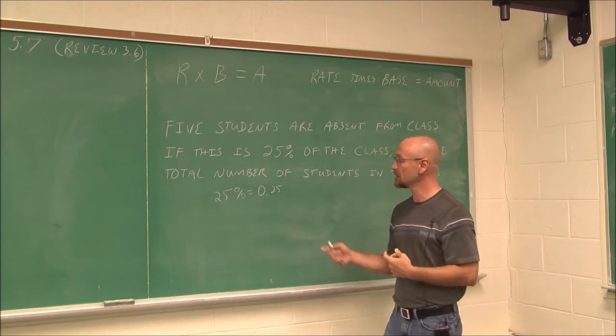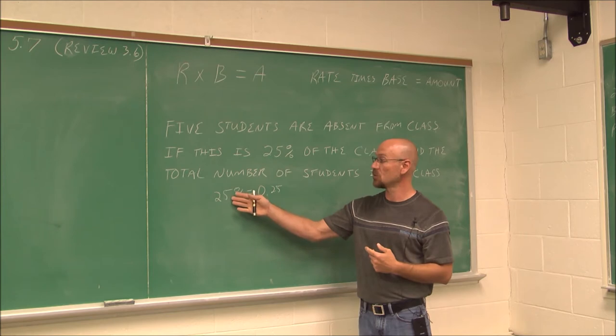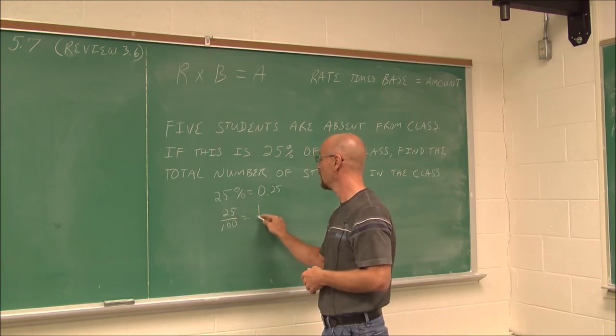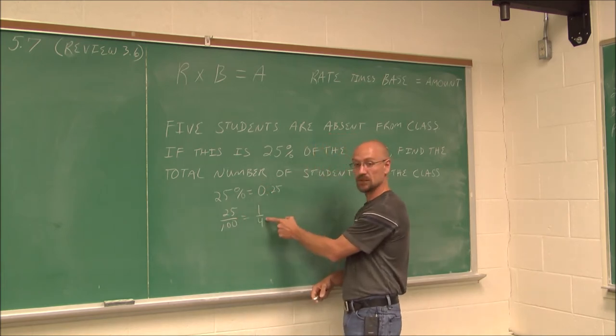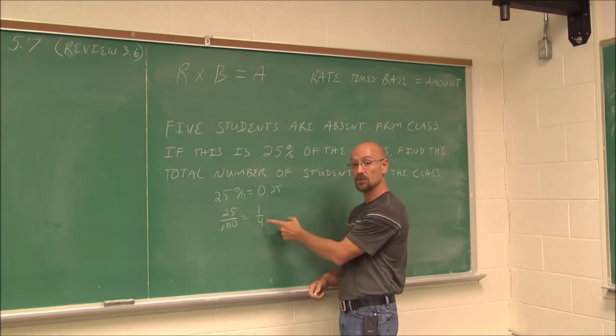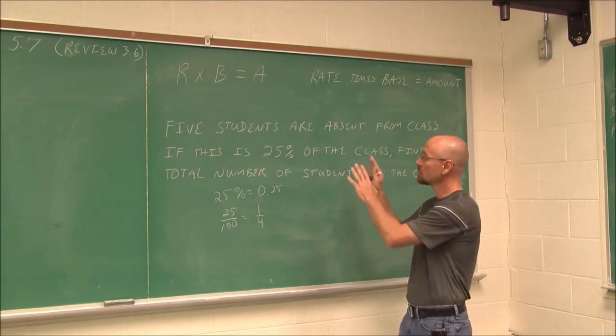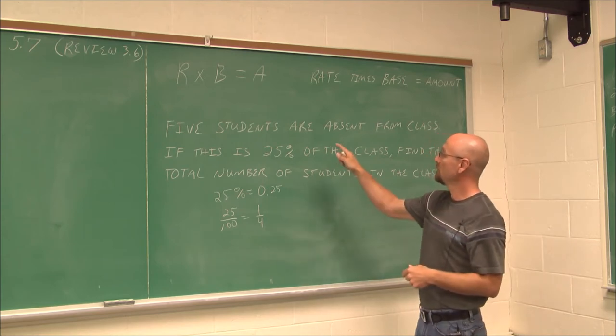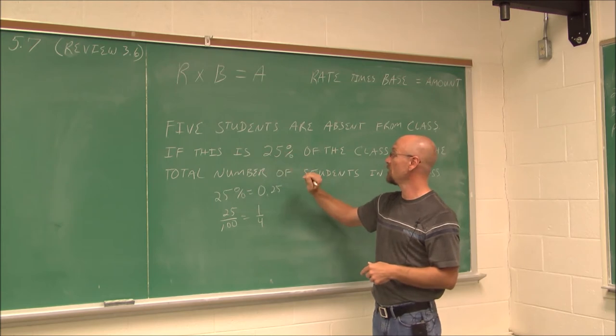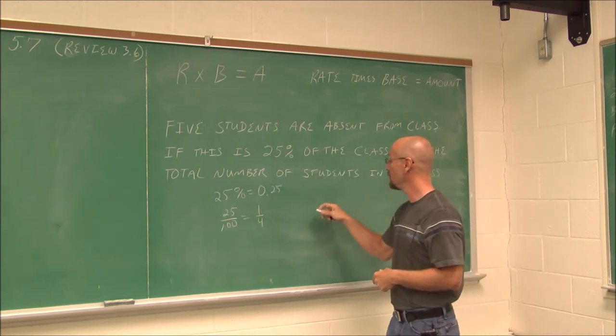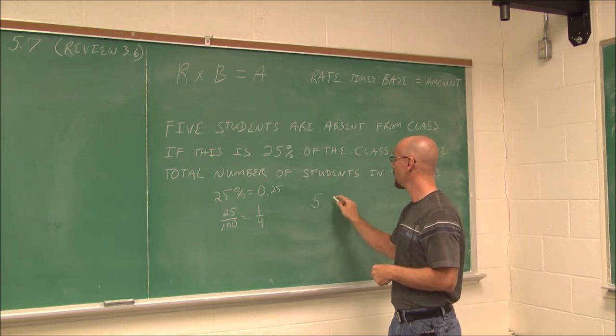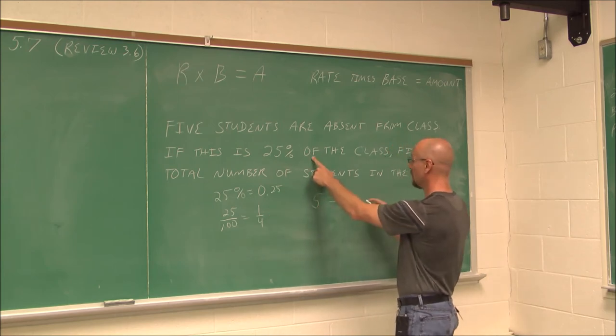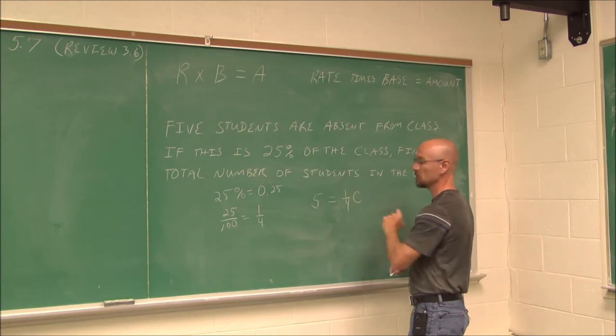Or maybe we also recognize this as a quarter. Maybe we want to convert this as 25 over 100 and reduce it. 25% or per 100 is a quarter. So if we're comfortable with that conversion, maybe we're comfortable with this fraction because we deal with quarters all the time. Let's translate this now into an algebraic expression. Five students are absent from class. If this is 25% of the class, basically when we translate that, 5 is 25% or 1 quarter of tells me to multiply the class. And I'm going to use the variable C because that's the class.